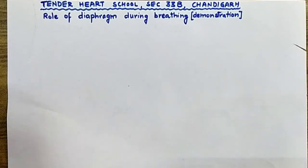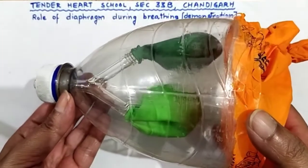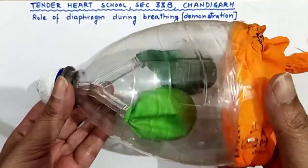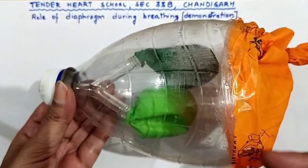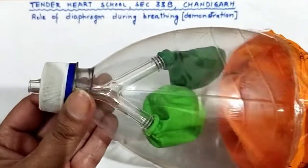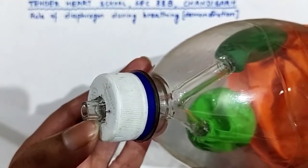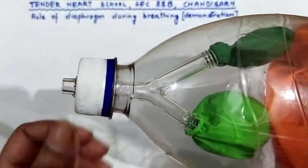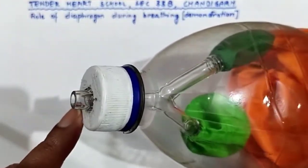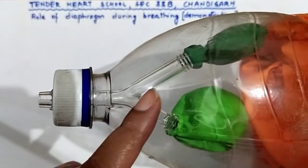Today, through a model, we are going to understand the role of the diaphragm. We have taken a pet bottle. The bottle has been cut from the bottom. And in the cap of the bottle, we have made a hole. Through that hole, a Y-shaped glass tube has been inserted — a Y-shaped glass tube passing through the hole made in the cap of the bottle.